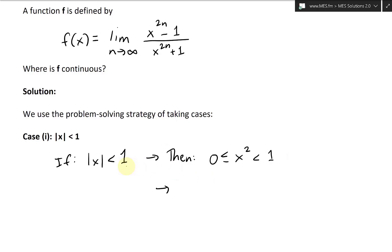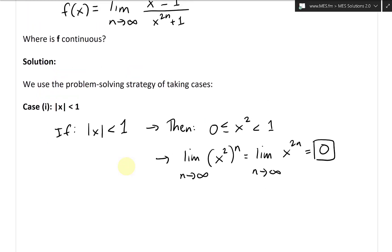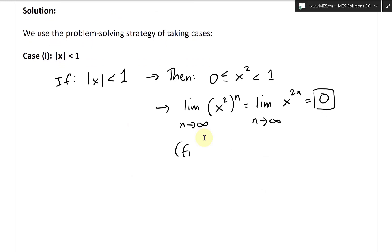So what we have is the limit as n approaches infinity of x to the 2n, which we can write as x squared to the power of n. This equals the limit as n approaches infinity of x squared to the n, and this equals zero. This result is from my earlier video.